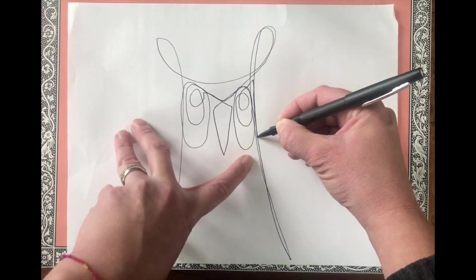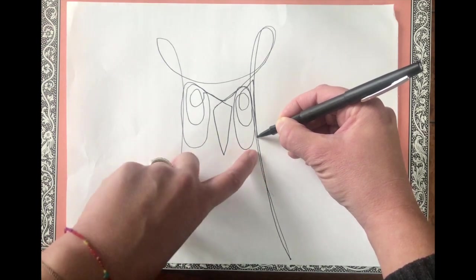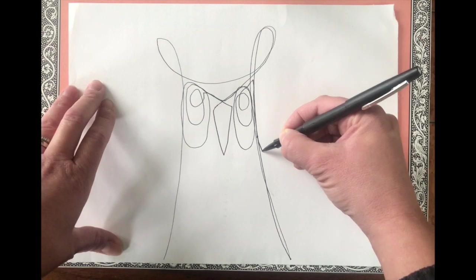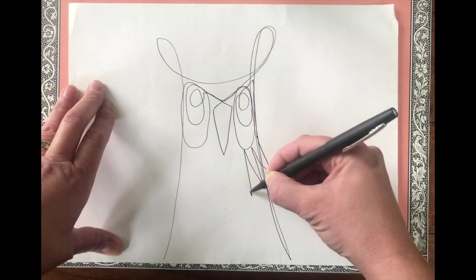Now we have to decide what we're going to do for the feathers. Are you going to do pointed feathers, curved feathers, square feathers, a combination of both? I think for this one, I'm going to do some pointed feathers. So I'm going to go up and down like a triangle.